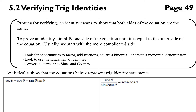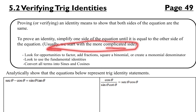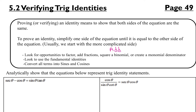The nice thing is you know the answer — it tells you the answer from the get-go, so you know what it needs to look like. We're always going to look to start with the more complicated side. What I usually mean by that is things that include addition or subtraction — those are more complicated than multiplication. So the side with addition or subtraction is usually where you want to start. Or you might look for the side that has fractions on it.